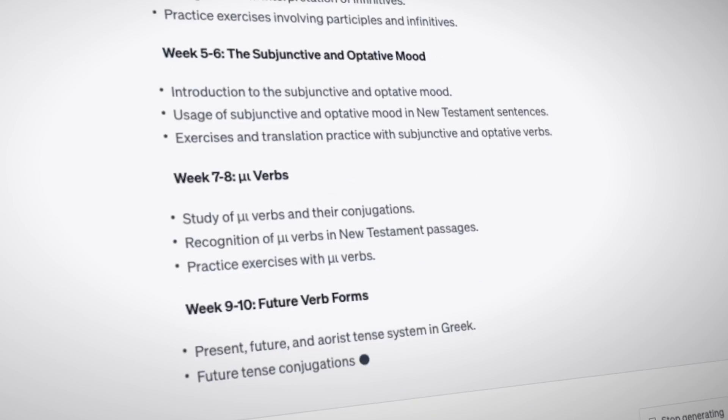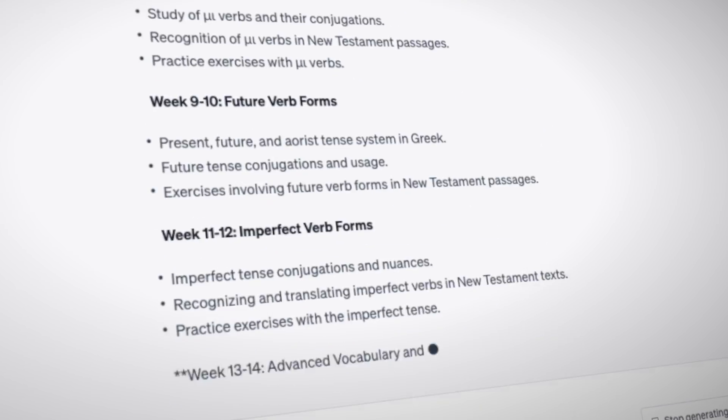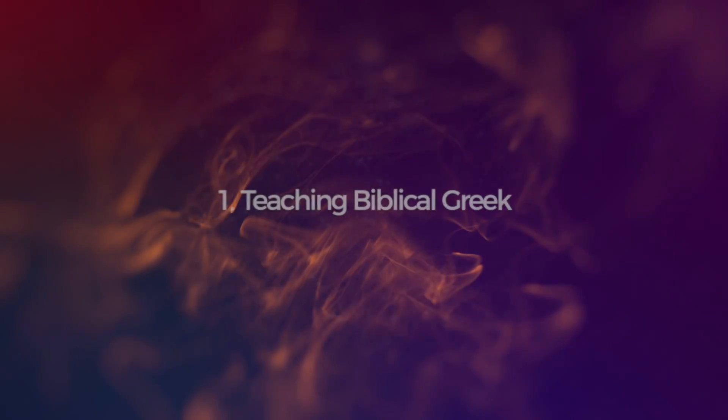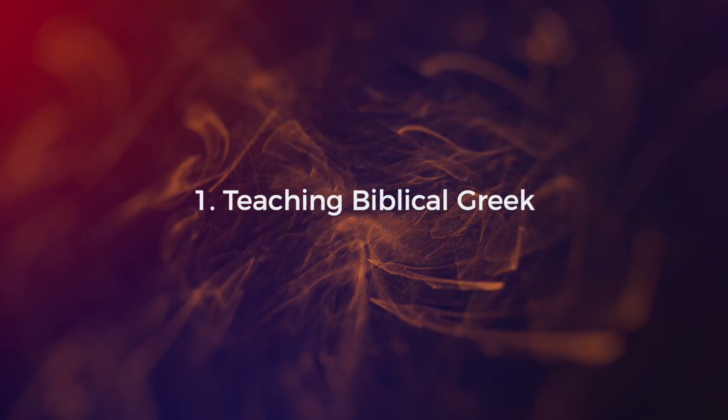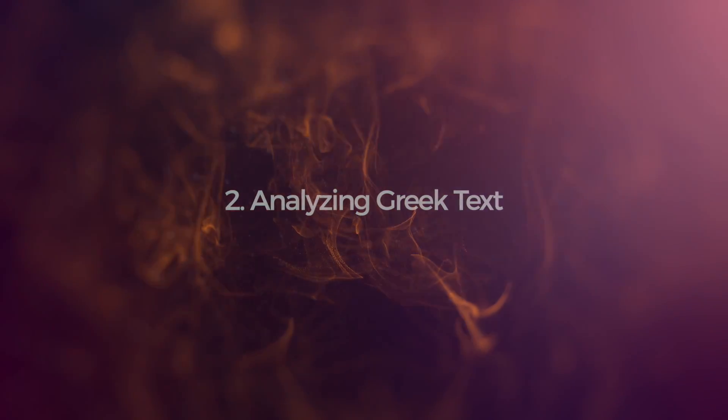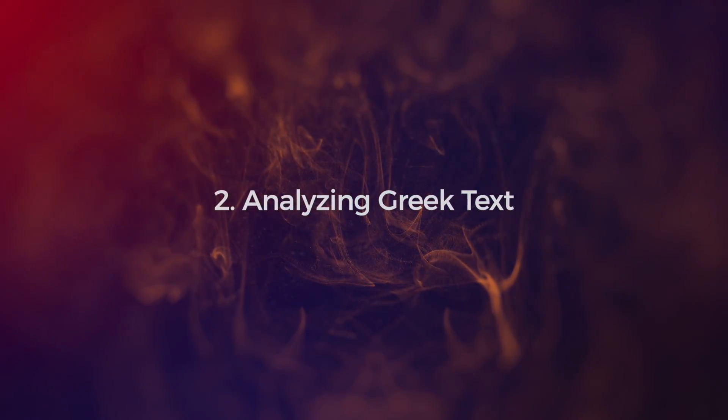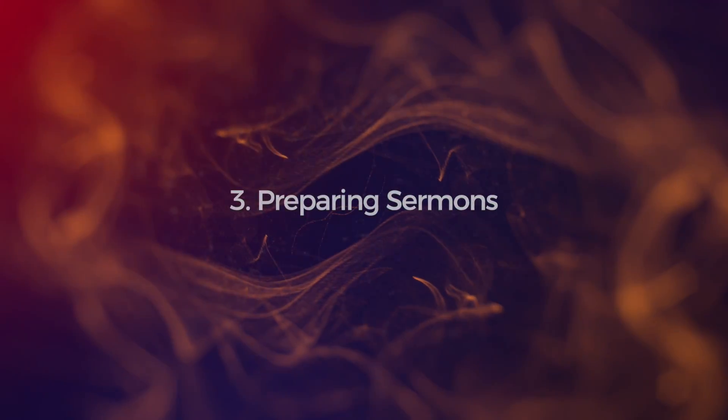In this video we're going to talk about how AI works with these things, particularly around three areas. One is around teaching Biblical Greek — I'm going to ask it to build me a course outline, refine it, and see if we can get it right. We're also going to look at building or analysing Greek texts and finding the grammatical structures, and then we're going to look at how good it is at putting together something like a sermon outline.